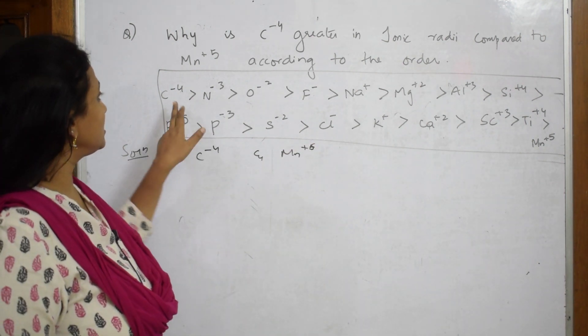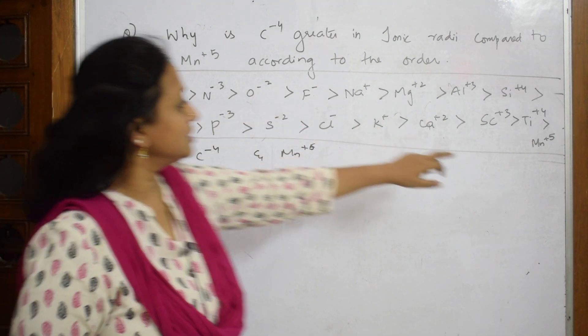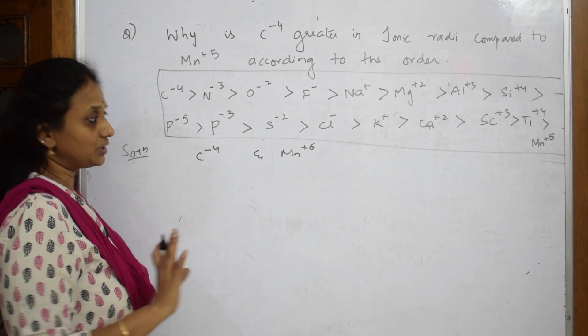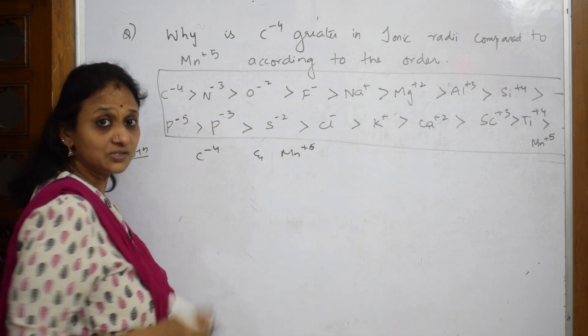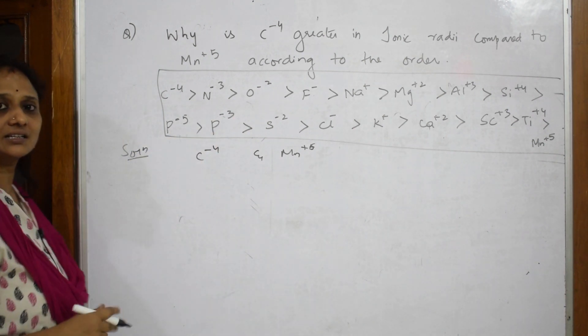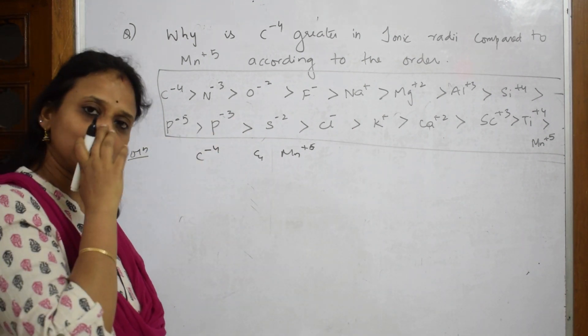Just see here, maximum is C^-4. Where is Mn? Mn is here. First of all, observe carefully. They've given us a series of ions. Take the ions and start writing the electronic configuration. Once electronic configuration is written, the whole answer will be easy for you to write.